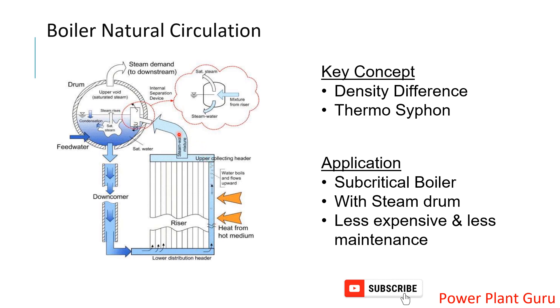High temperature decreases the density of the water in the risers, while low temperature in the downcomers maintains higher density. As we know, lighter material goes up and denser material comes down.